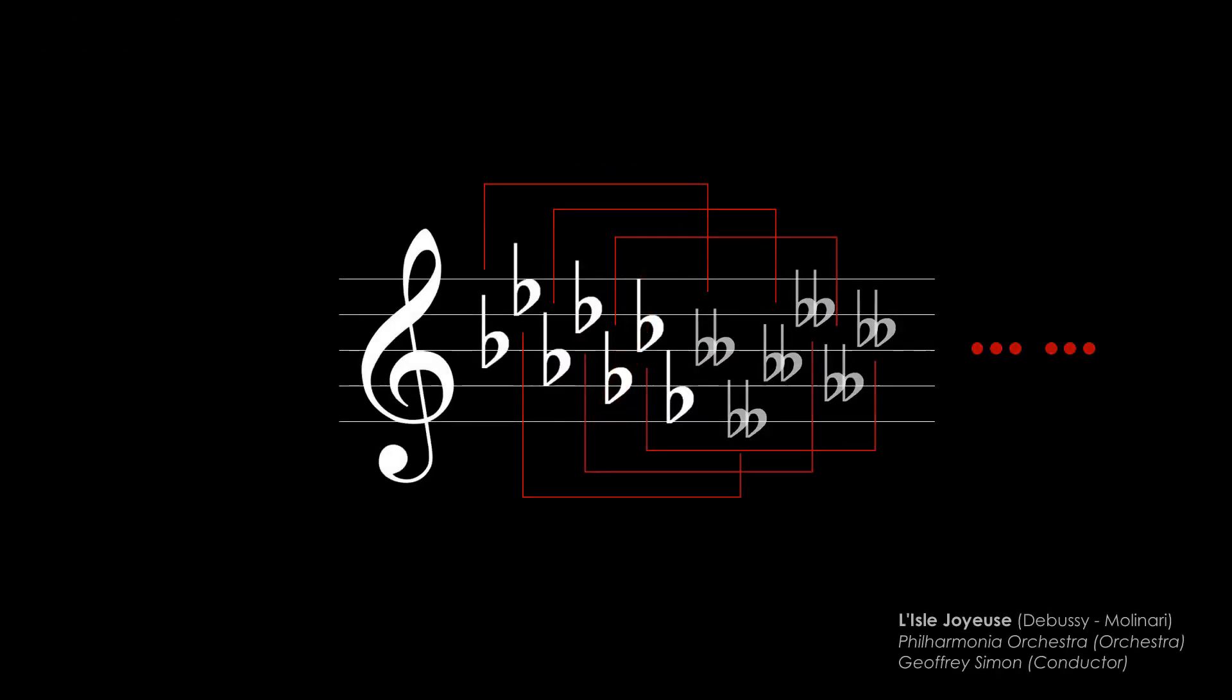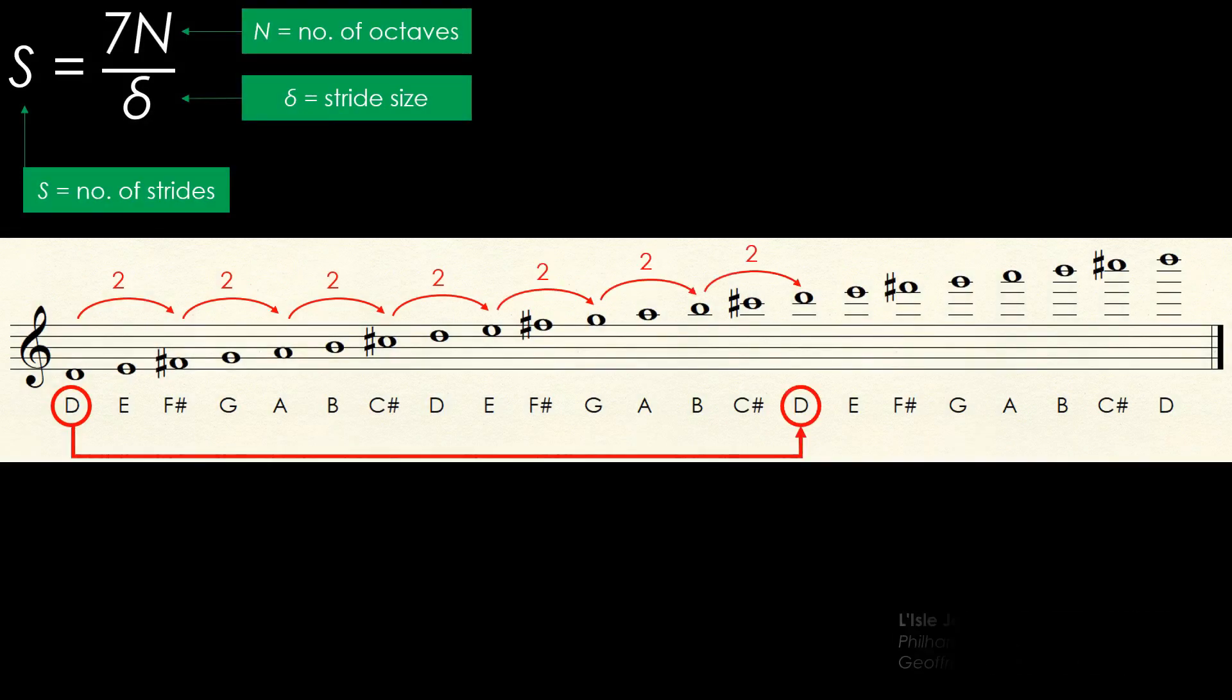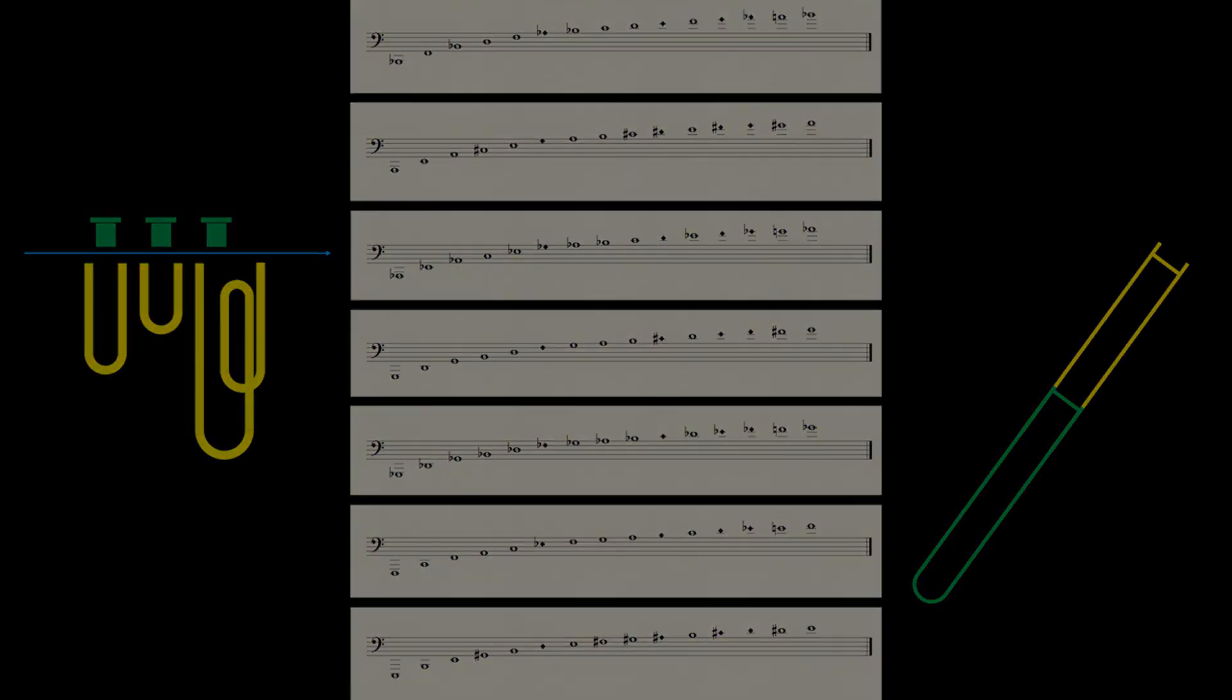By talking about the number seven, we get a glimpse of how key signatures work, how the cyclic property of scales defines harmonic progression, and the role of harmonic series in sound generation, each of which deserving its own videos.